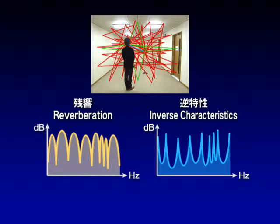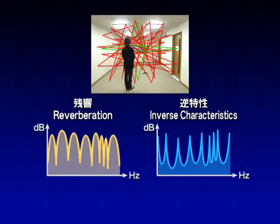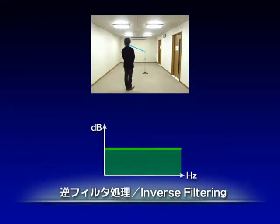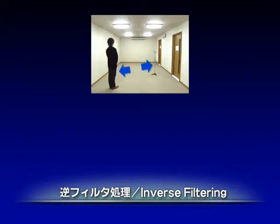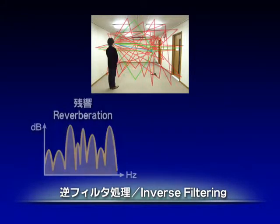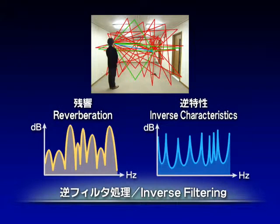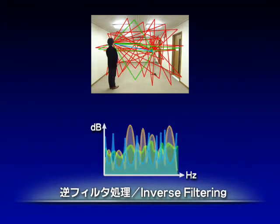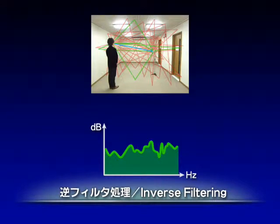The effect of reverberation can be eliminated by using inverse characteristics of reverberation. This is called inverse filtering. However, inverse filtering does not work so well when the reverberation characteristics change — for example, due to small positional differences of the speaker or the microphone.